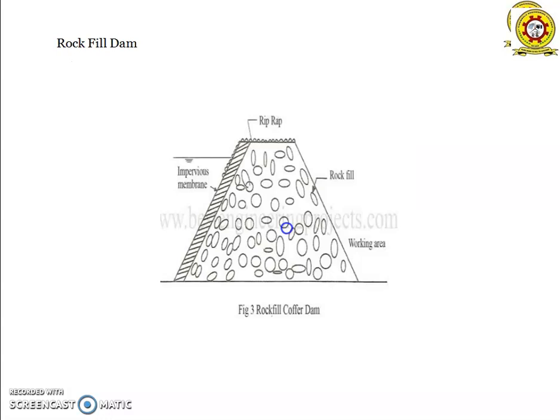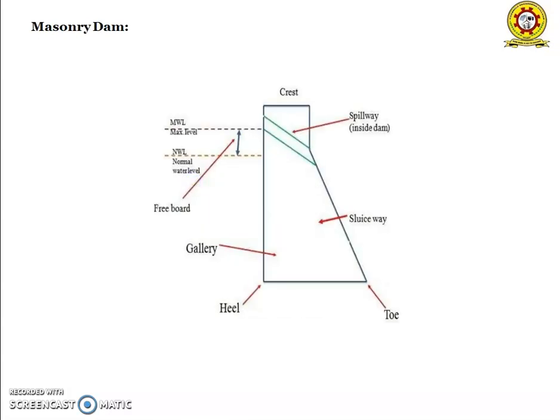The second type is rock fill dams. In rock fill dams, the dam is completely filled by rock. A rock fill dam is a type of embankment dam which comprises primarily compacted rock materials. They are used in mountain locations where rocks are available. In masonry dams — specifically solid gravity dams — the mass and bulk depends upon weight for stability.